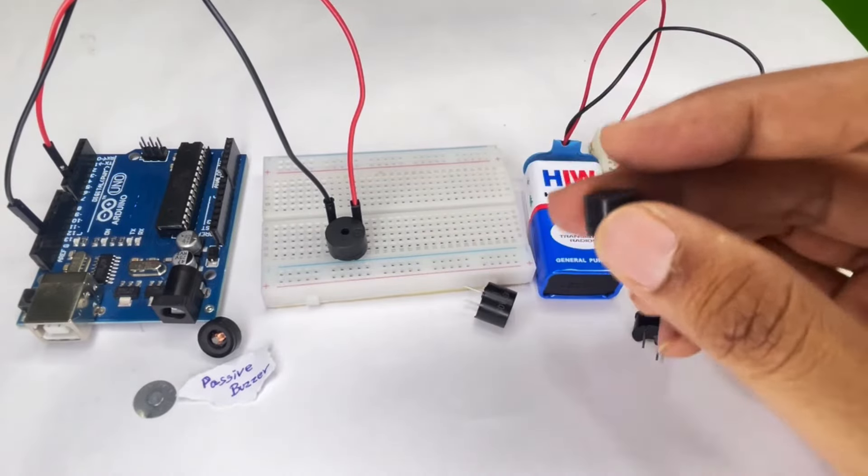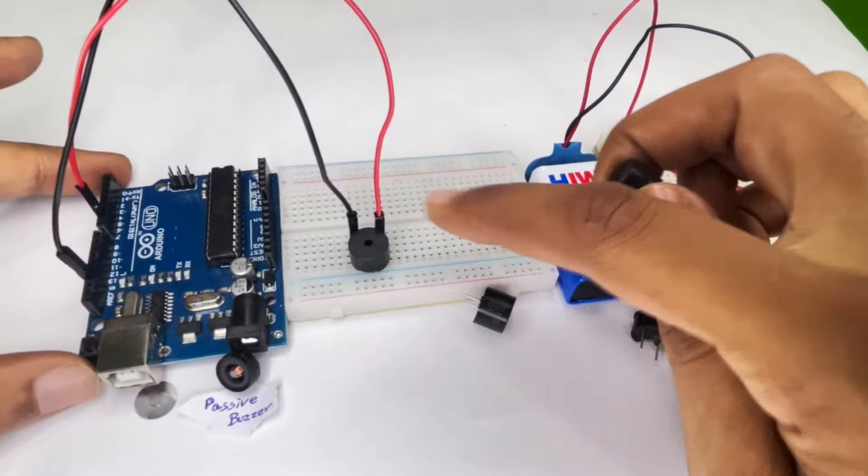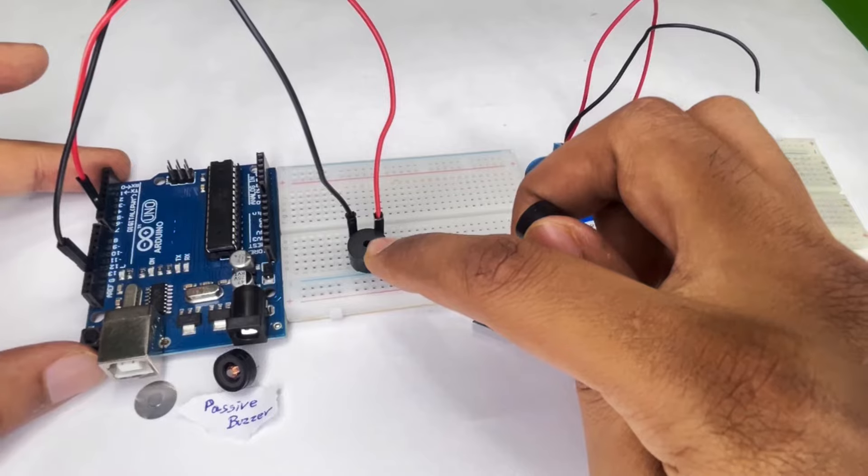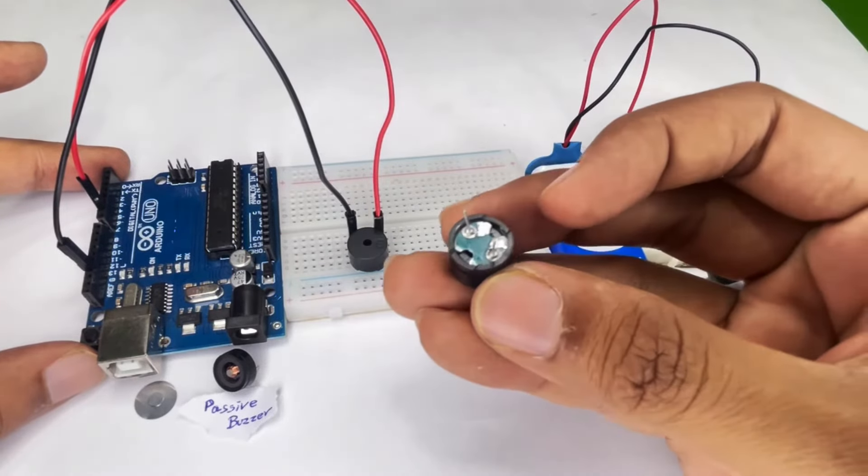For a passive buzzer, you can't just directly power it with a battery and expect it to work. What we have to do is use an Arduino board to generate a PWM signal, or any board to generate a PWM signal, and provide it to the passive buzzer.